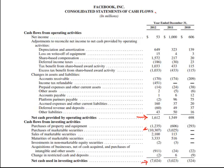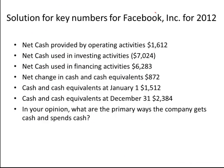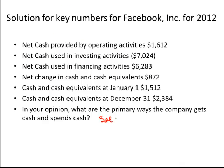Let's see if we filled it out right. Cash provided for operating, investing, financing, the change in cash, beginning cash, and ending cash. What are the primary ways the company gets cash? We look for something that's positive, and it looks like they sold stock. And how did they spend their cash? They bought marketable securities.